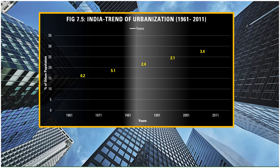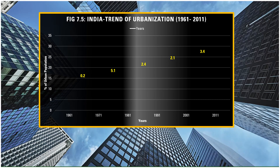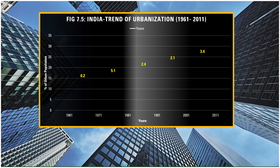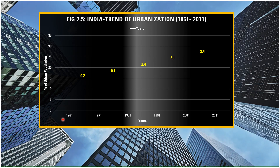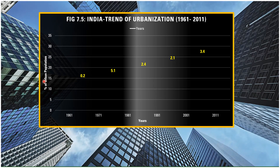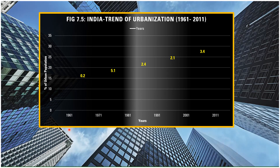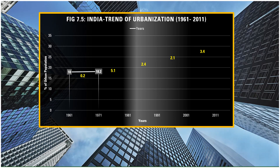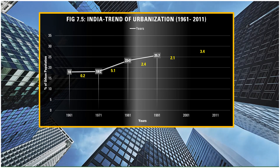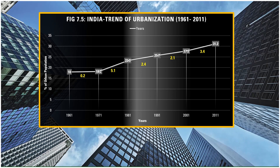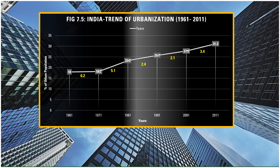Now let's study figure 7.5 on page 48 of our textbook. The figure shows a line graph where the x-axis has number of years (2 cm = 10 years) and the y-axis has percentage of urban population (1 cm = 5%). In 1961, the percentage of urban population was 18. In 1971, it was 18.2. In 1981, it was 23.3. In 1991, it was 25.7. In 2001, it was 27.8. And in 2011, the percentage of urban population grew to 31.2.